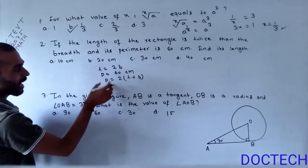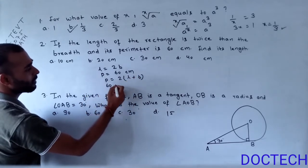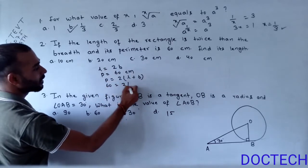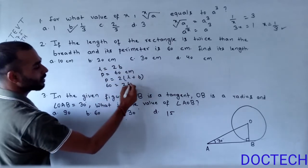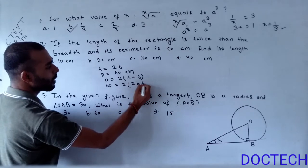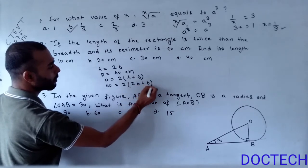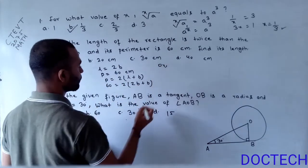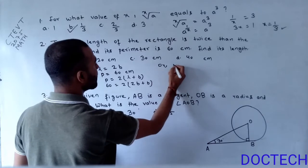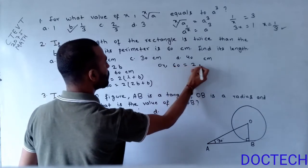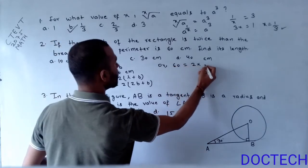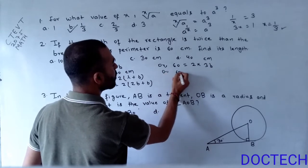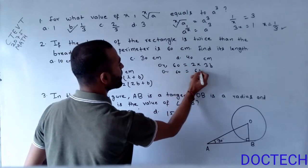We know that the formula for the perimeter of a rectangle is 2 times (l plus b). We put in the values: perimeter equals 2 times (2b plus b), so 60 equals 2 times 3b, giving 60 equals 6b.